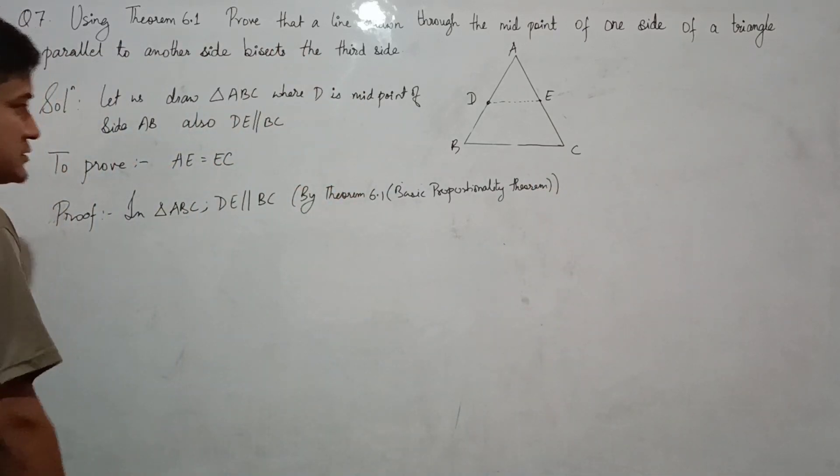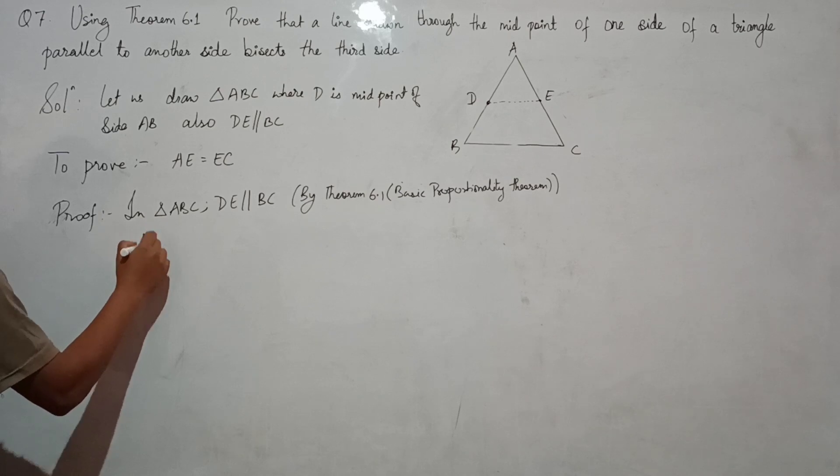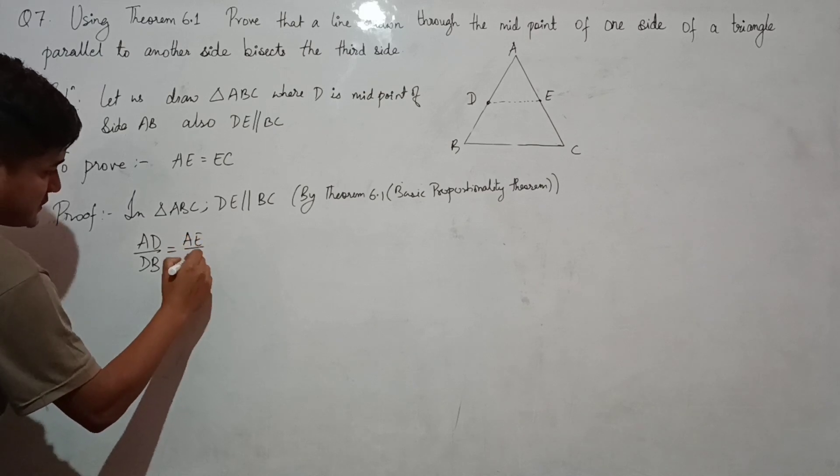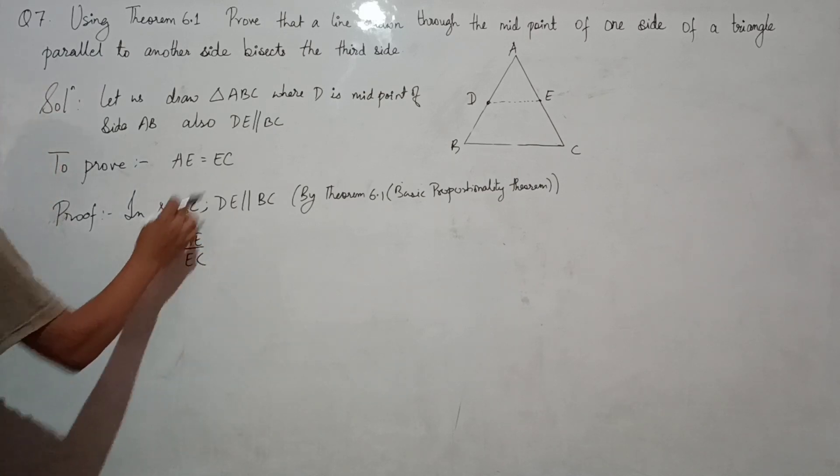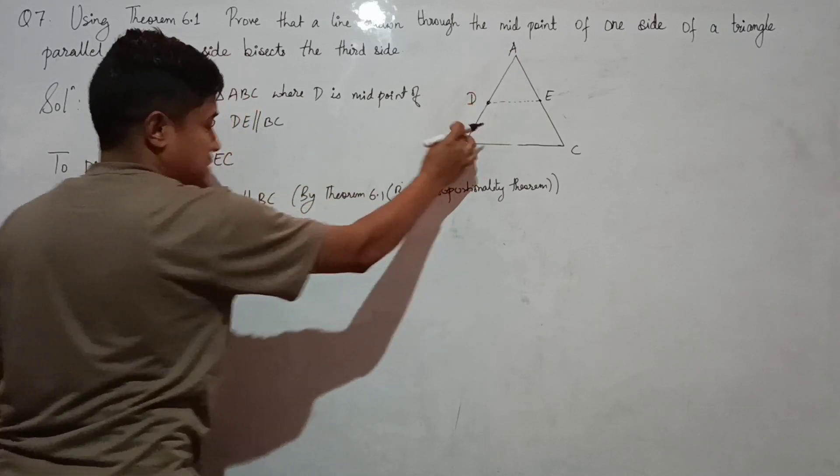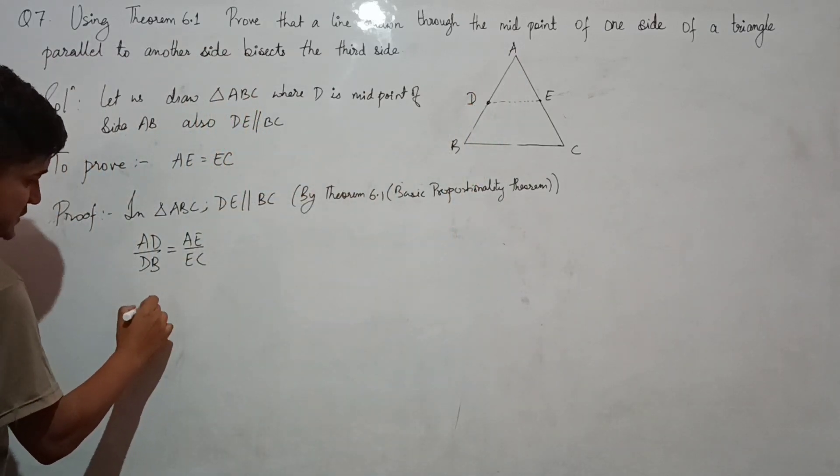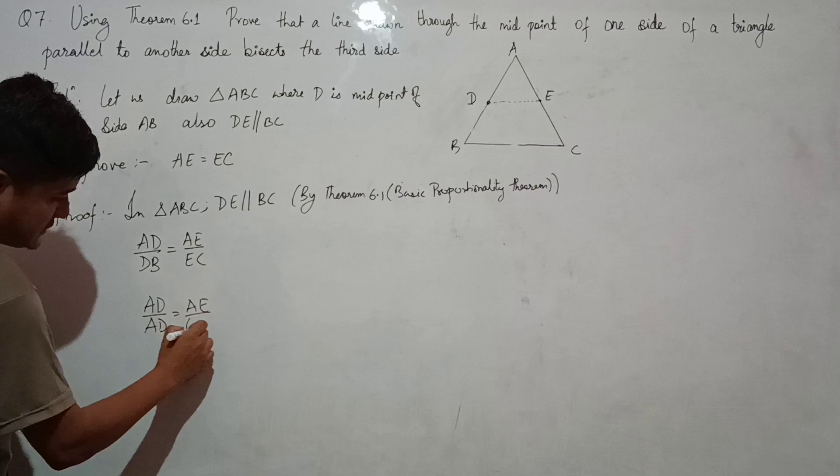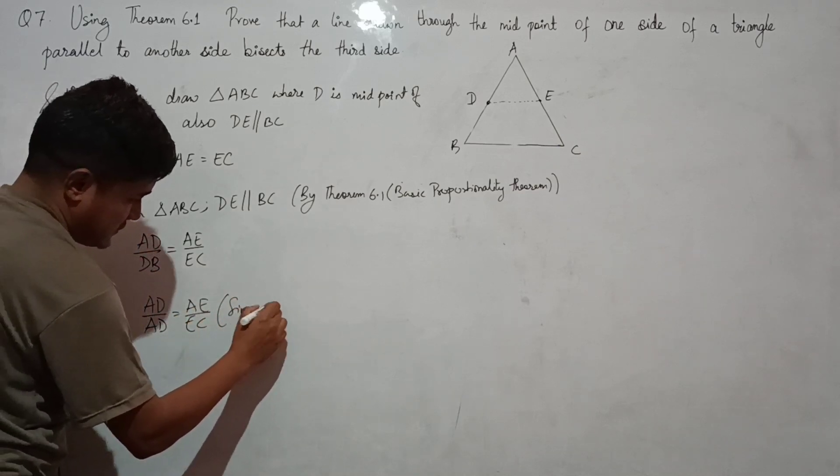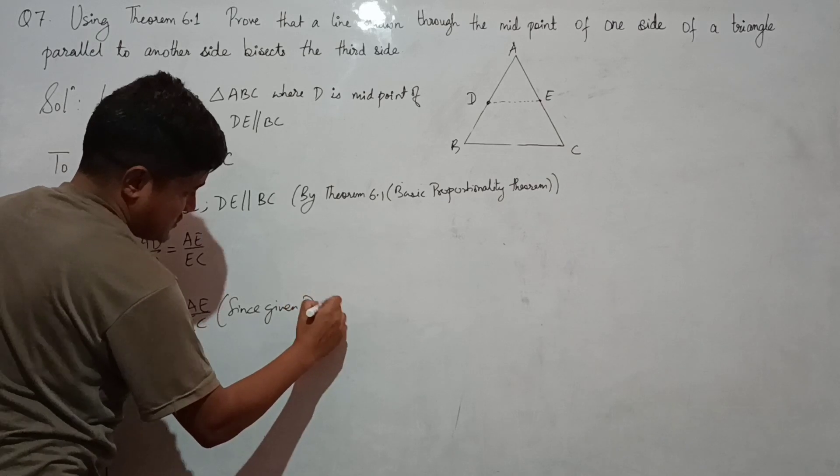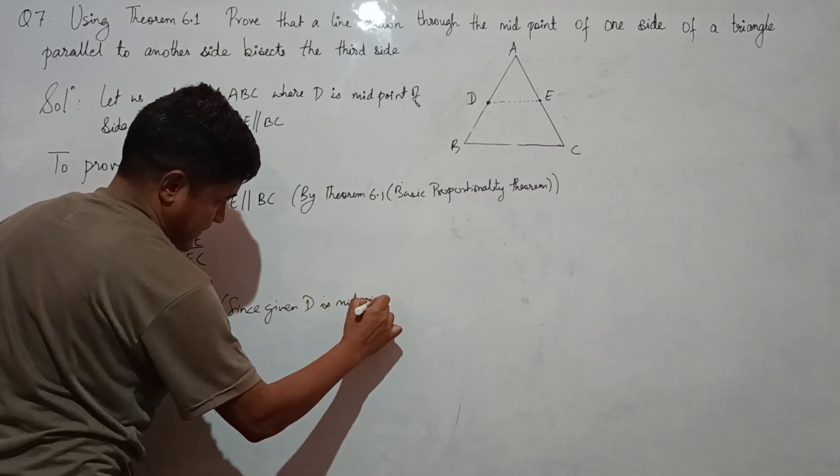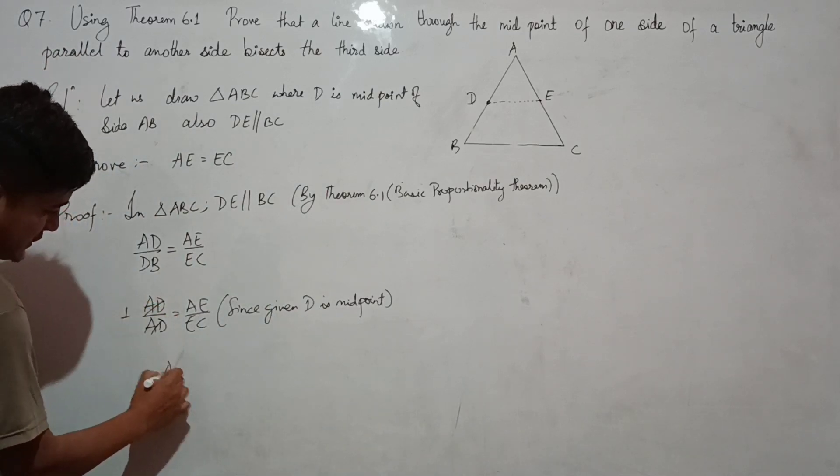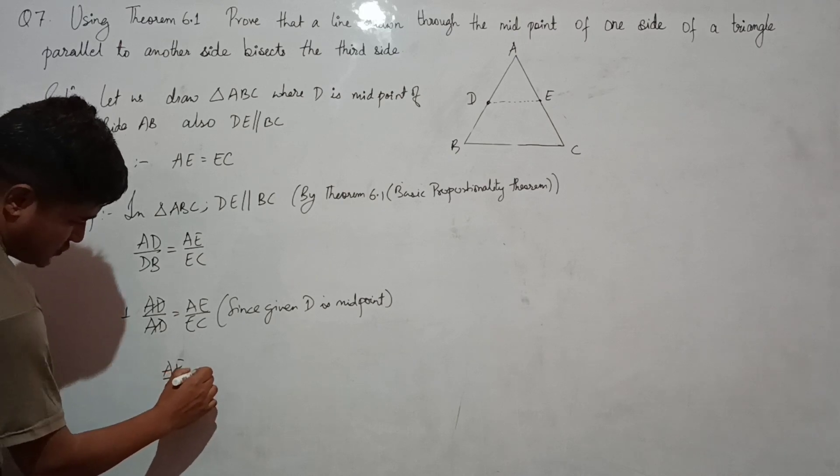AD by DB equals to AE by EC. Now since D is the midpoint, AD equals DB. So we can write AD by DB equals to one.